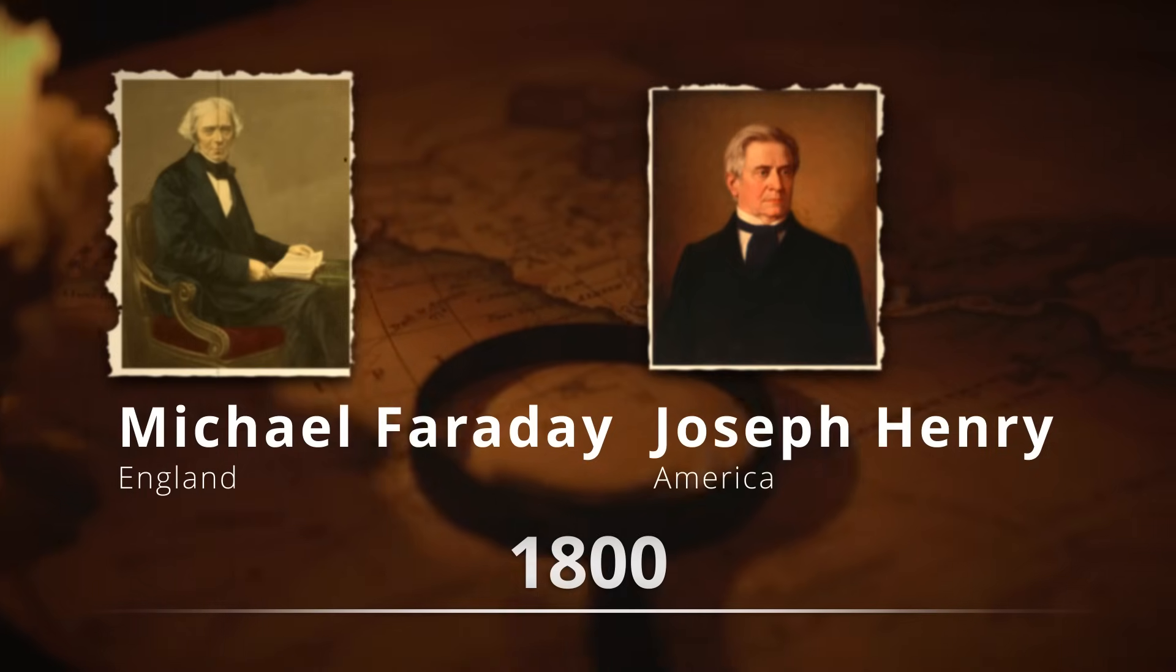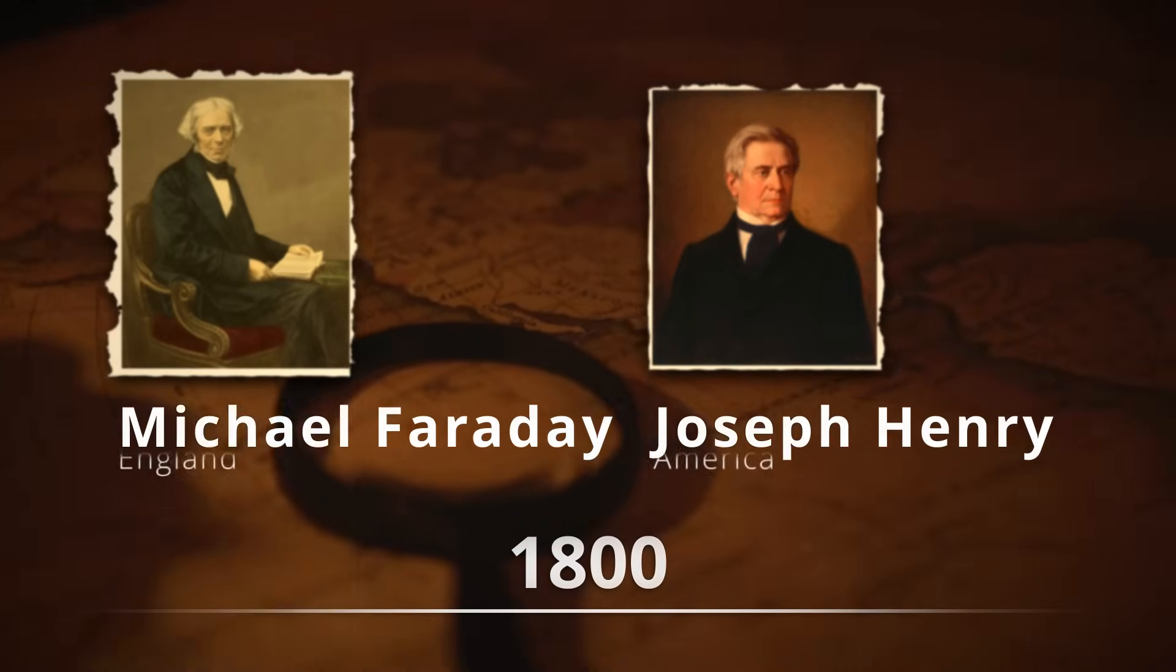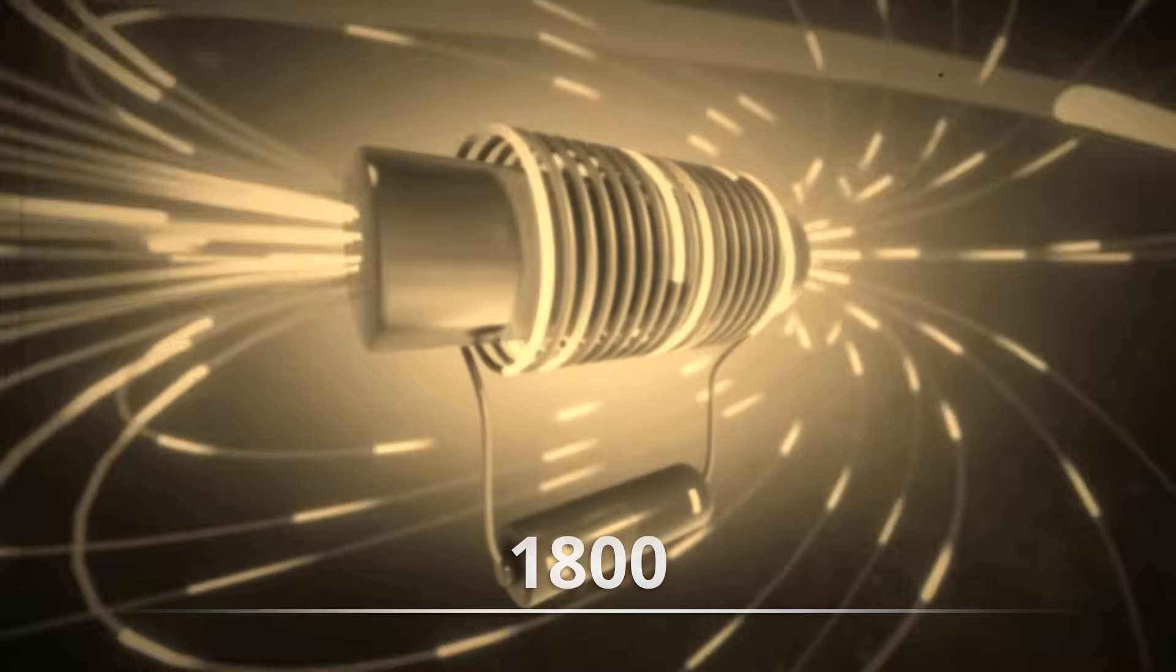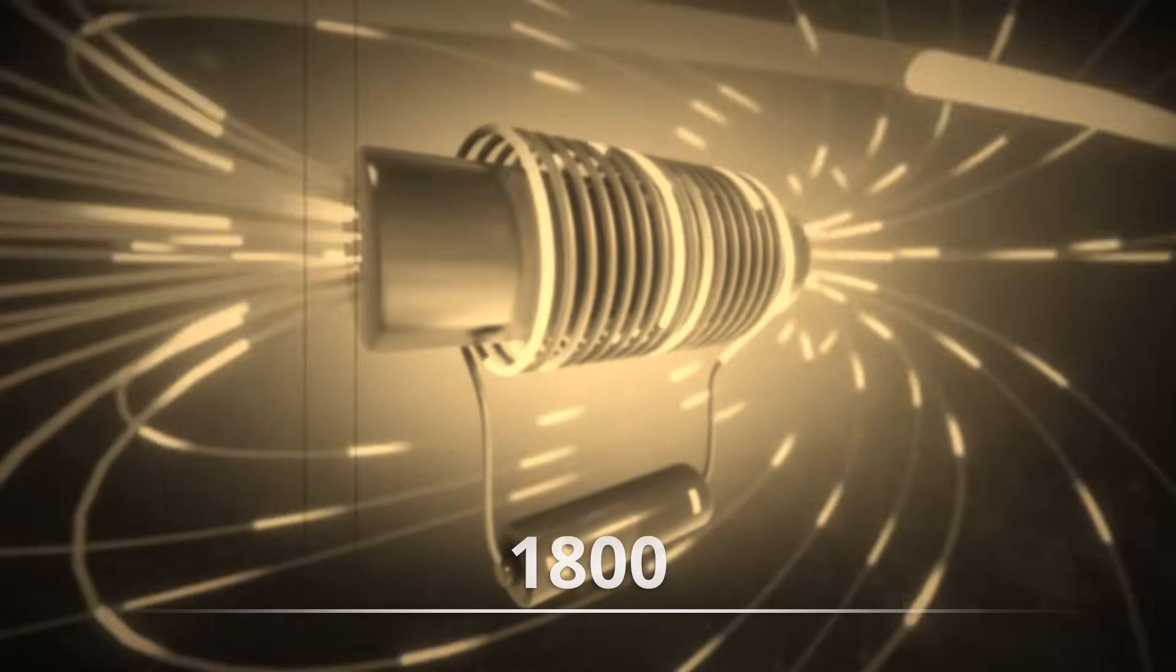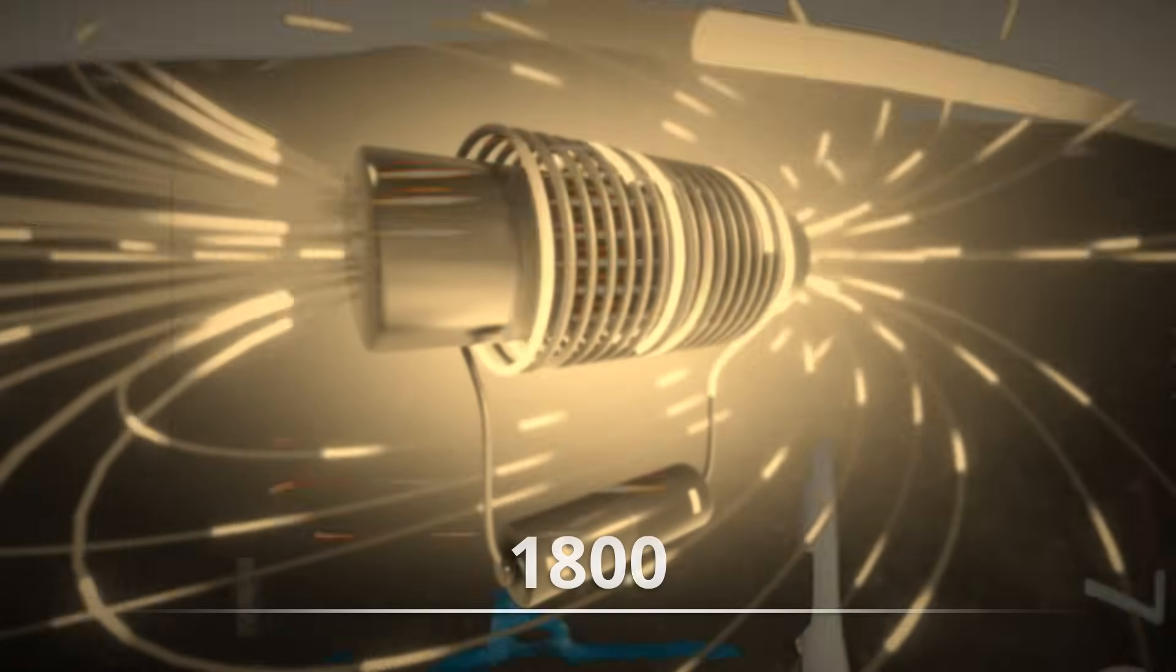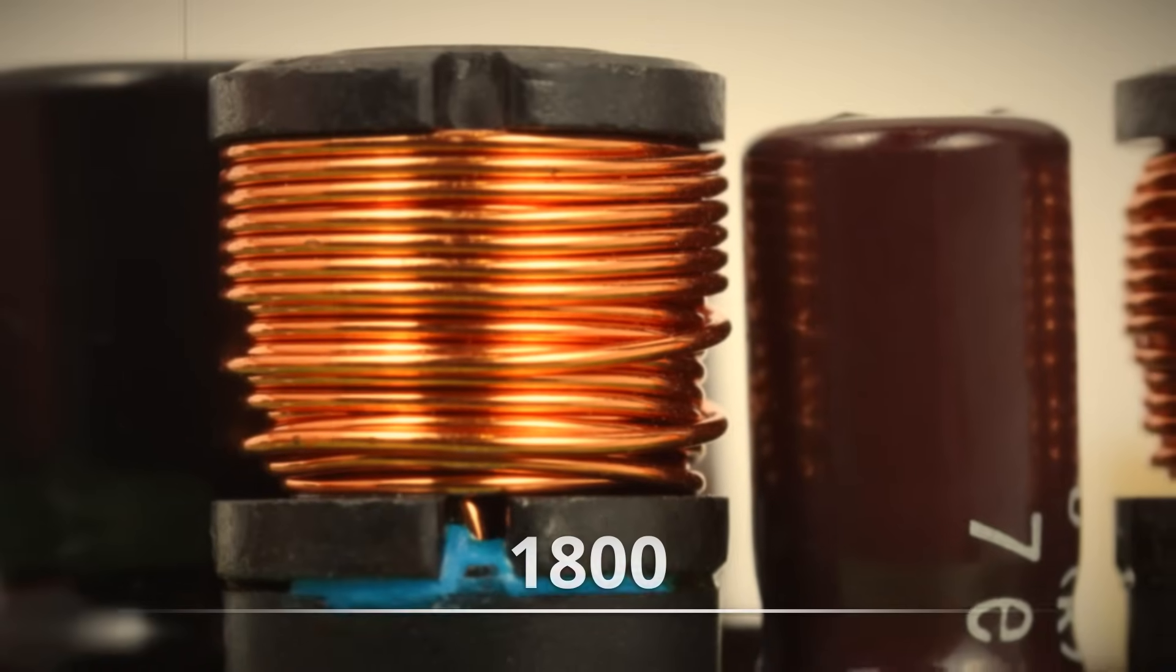In the early 19th century, scientists like Michael Faraday in England and Joseph Henry in America were experimenting with electricity and magnetism. Their groundbreaking work gave us inductors, devices that can store energy in a magnetic field.